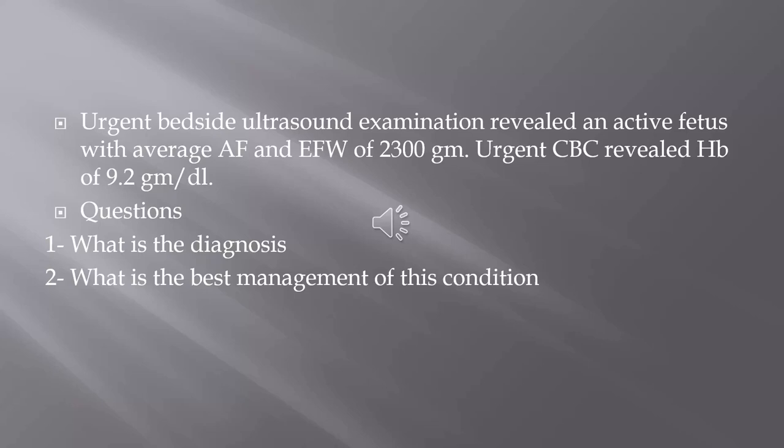Urgent bedside ultrasound revealed an active fetus with average amniotic fluid and estimated fetal weight of 2300 grams. Urgent CBC revealed hemoglobin of 9.2 grams per deciliter. The questions posed are: what is the diagnosis, and what is the best management of this condition? These two questions we are going to answer in the following presentation.